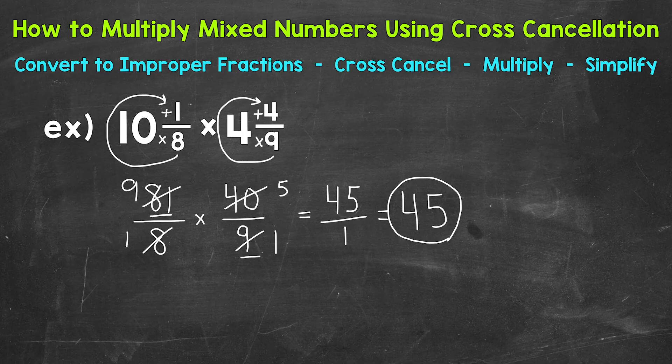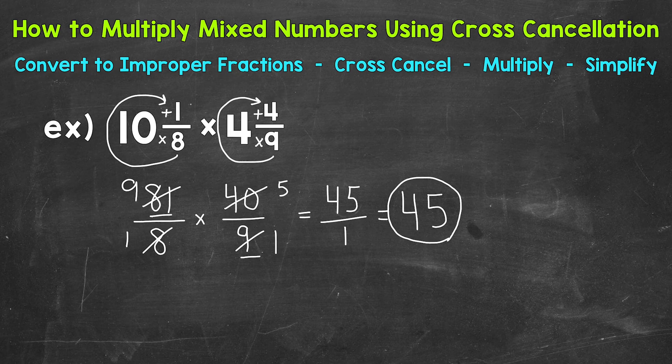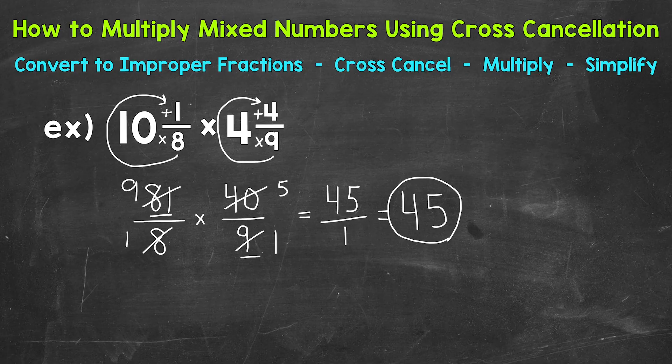Now if we did not use cross cancellation, we would have to multiply 81 times 40, and then 8 times 9, and then simplify from there. And eventually we're going to get the same answer. So cross cancellation is a useful tool when we have multiplication problems that involve fractions. Again, it gives us smaller and easier numbers to work with. Therefore, a simpler problem to solve. Think of it as simplifying the problem before multiplying.